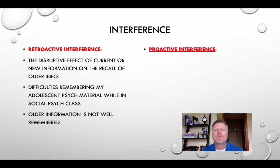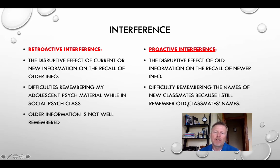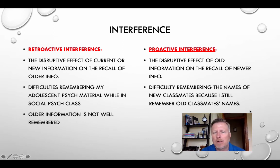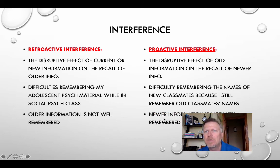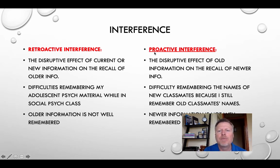On the other hand, proactive interference means newer information is not well remembered because older information is getting in the way. 'Pro' means forward — so new information is harder to recall. For example, you have difficulty remembering the names of your new classmates for second semester because you still more easily remember your older classmates' names. Think about passwords — you create a new password, and a week goes by and you can easily remember your older password but struggle to remember your newer one. That would be proactive interference.